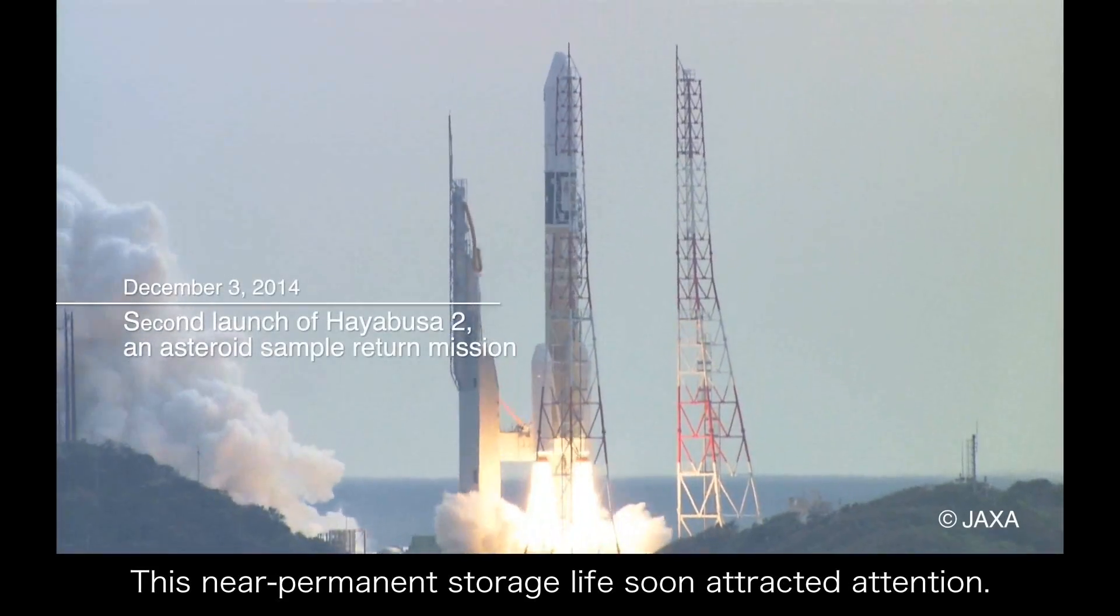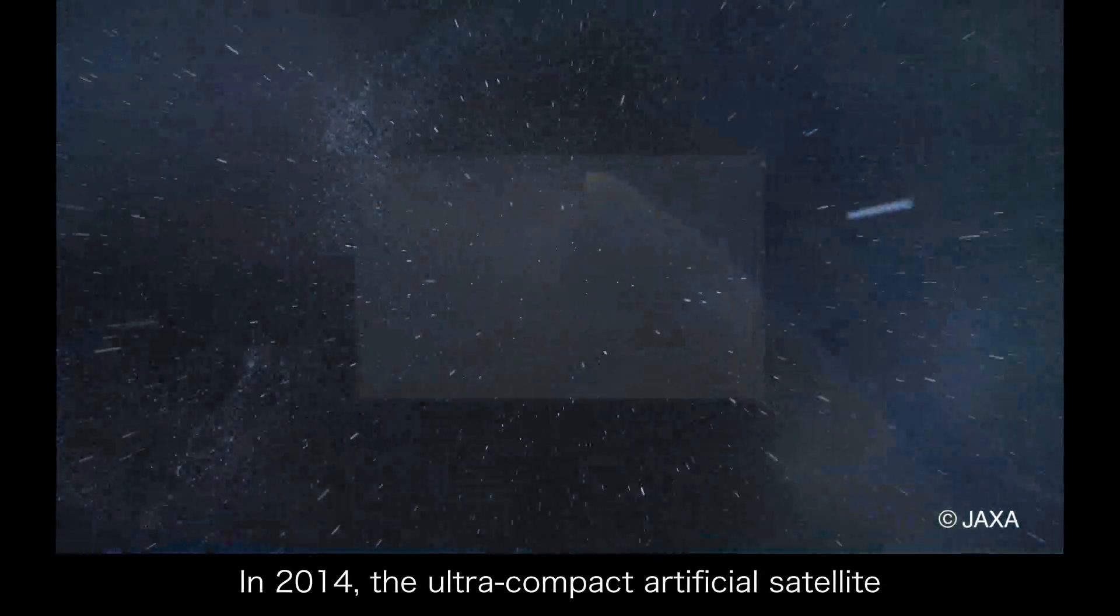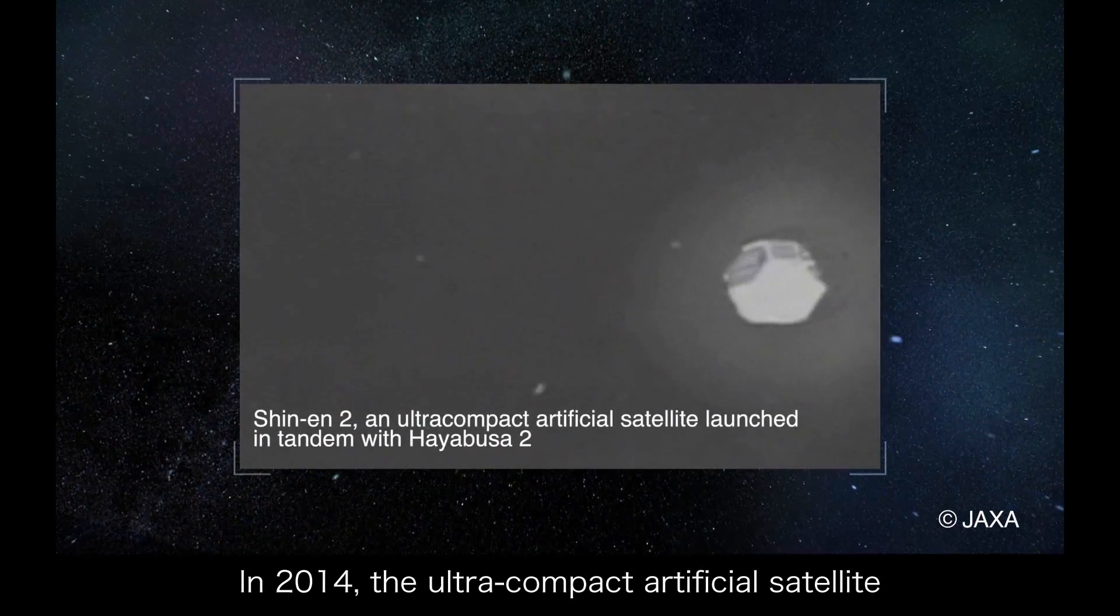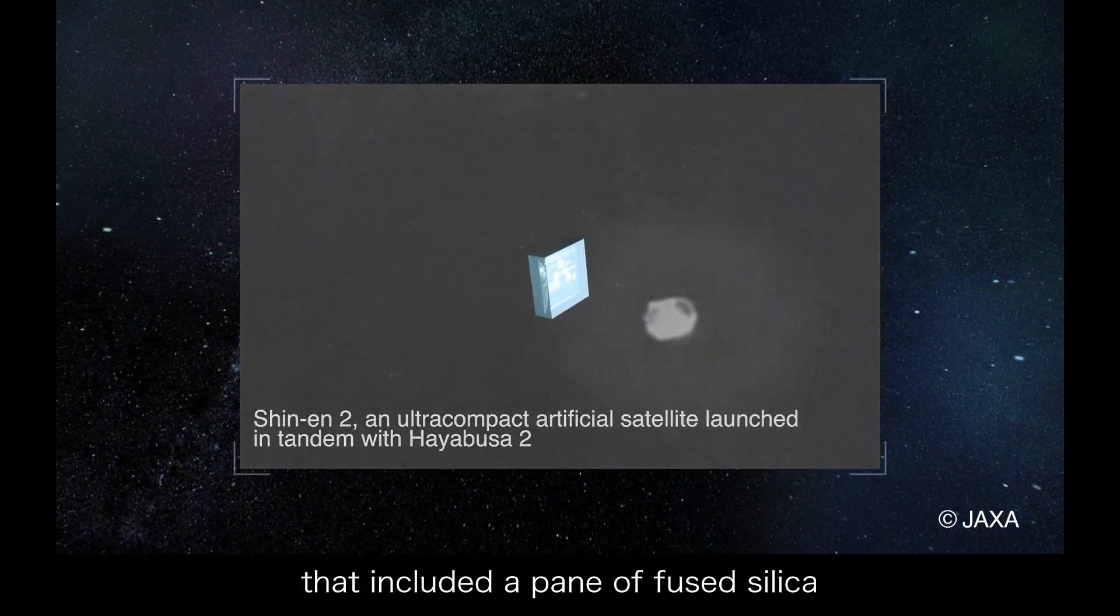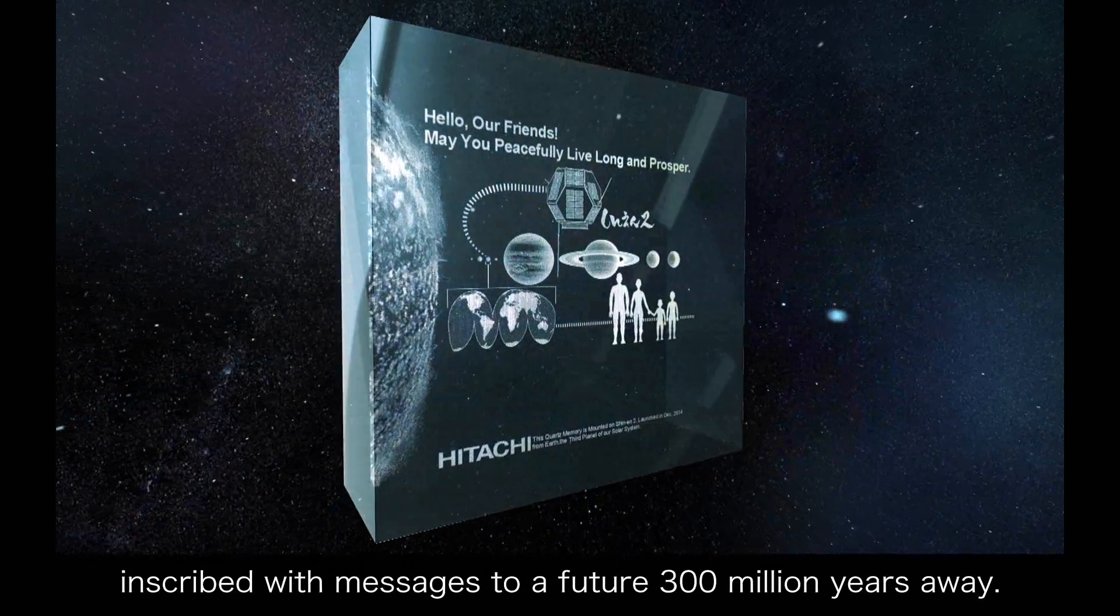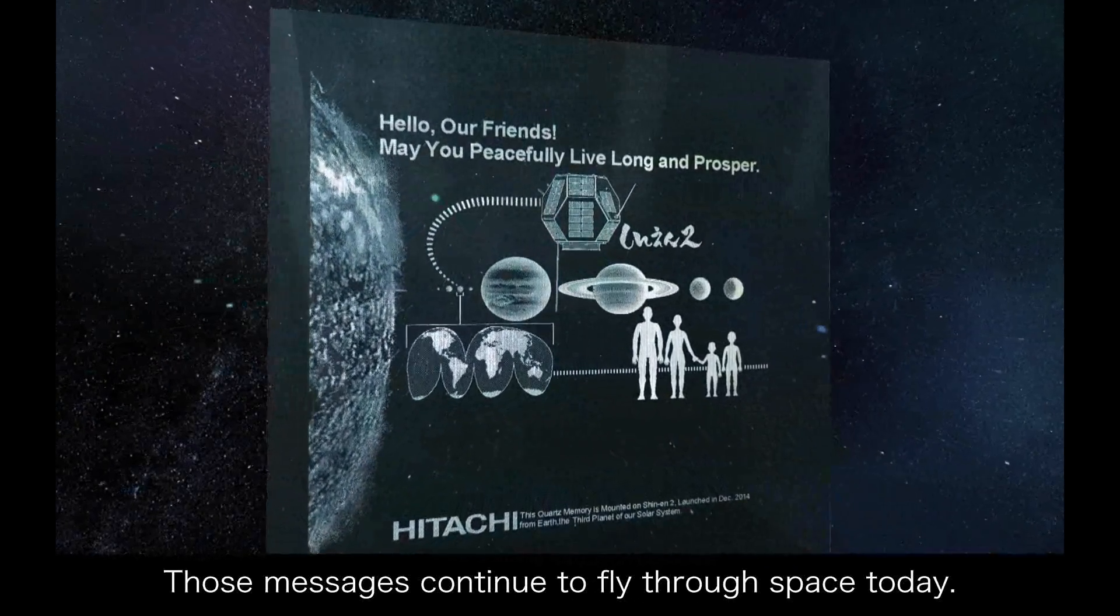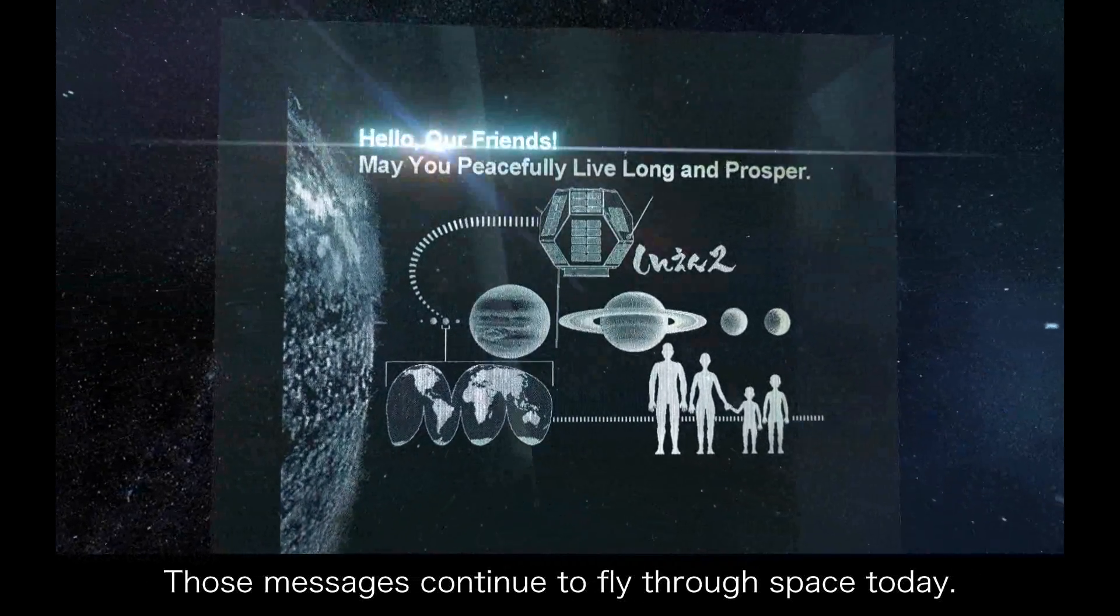This near-permanent storage life soon attracted attention. In 2014, the ultra-compact artificial satellite Sheen-N2 was launched with a payload that included a pane of fused silica inscribed with messages to a future 300 million years away. Those messages continue to fly through space today.